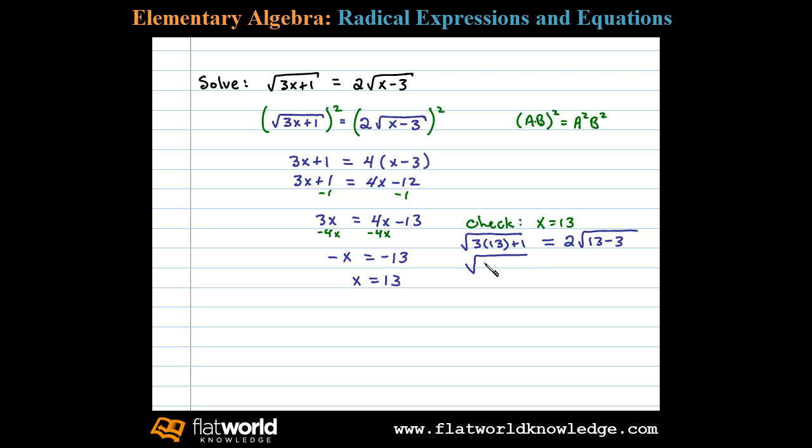Simplifying, 3 times 13 is 39, and 13 minus 3 is 10, so the square root of 40. We need to see if that equals 2 times the square root of 10. 40 is 4 times 10, so the square root of 40 simplifies as 2 square root of 10, and certainly that equals 2 square root of 10.